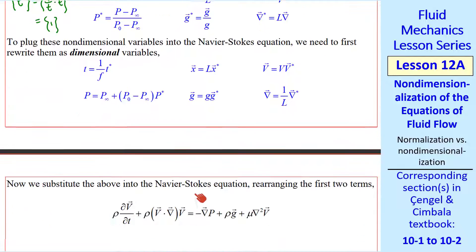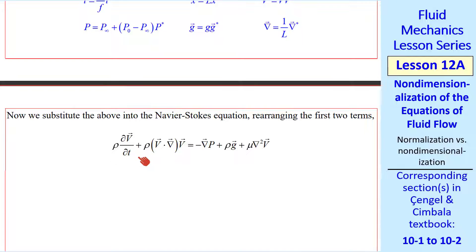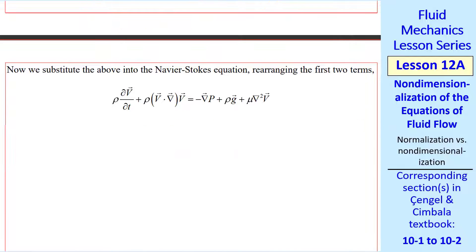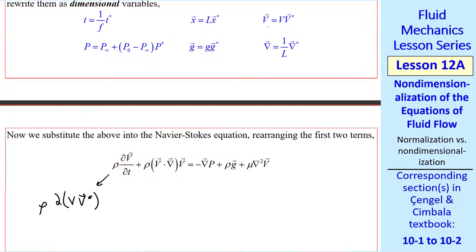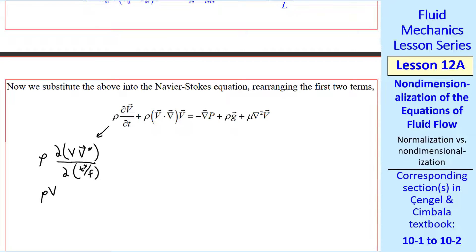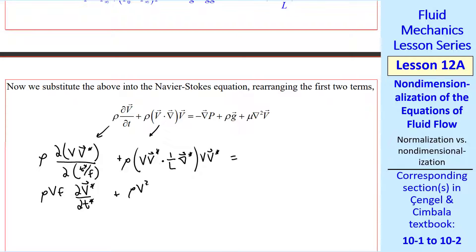We plug all these into the Navier-Stokes equation. The first term on the left becomes rho·V·del(V*)/del(t*/f), collecting constants to give rho·V·f·del(V*)/del(t*). The second term becomes rho·V²/l times V*·del*·V*. I'll leave it to the viewer to work through the right-hand side in a similar way.